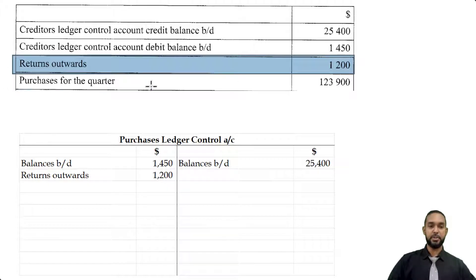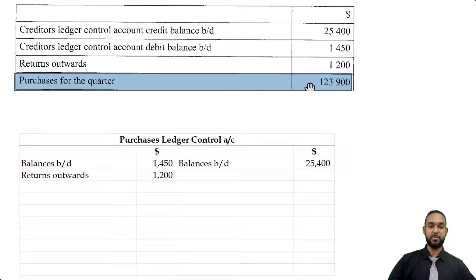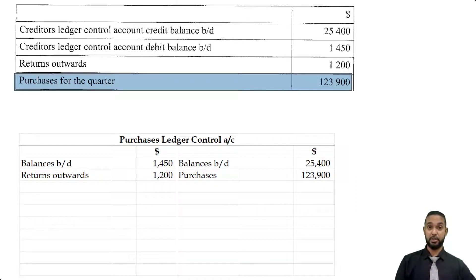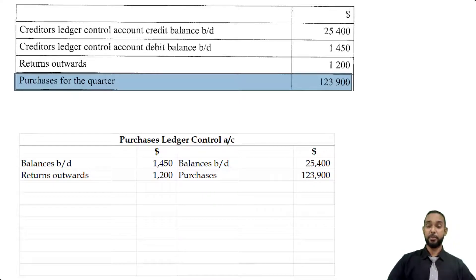I'm seeing purchases for the quarter of 123,900. They didn't say credit purchases specifically, but there's no other information to indicate otherwise, so we're going to safely assume it's credit purchases, and that goes on the credit side. When we purchase goods from creditors on credit, we take goods without paying at that point, but promise to pay later — that's a liability. To record an increase in a liability, you have to credit the liability account.